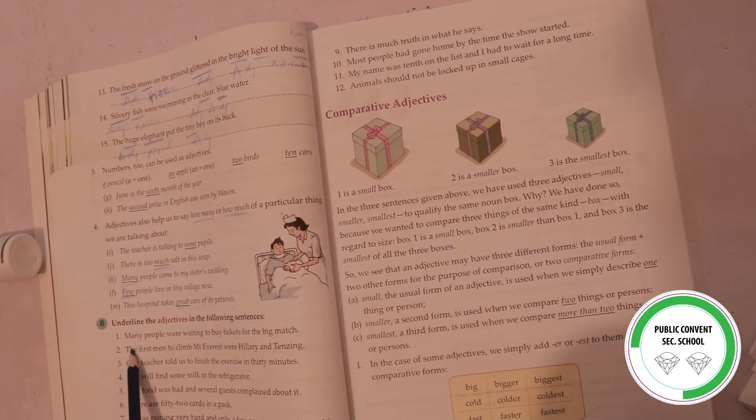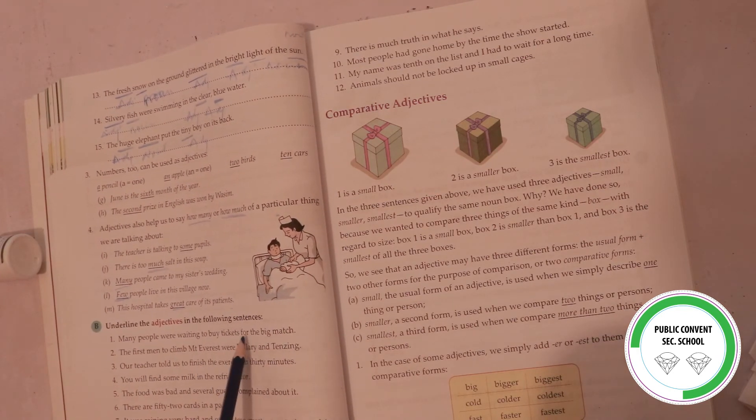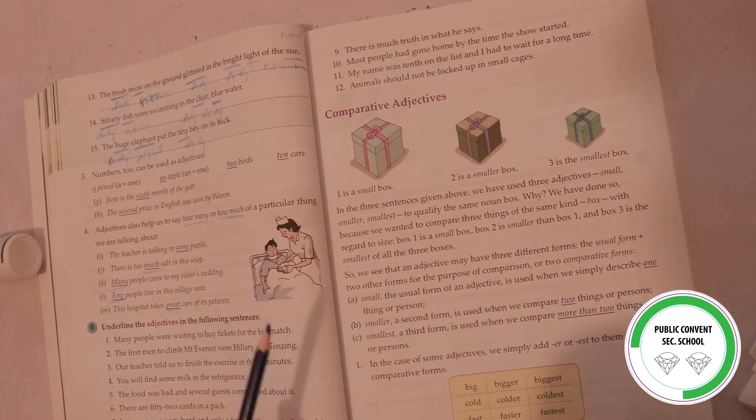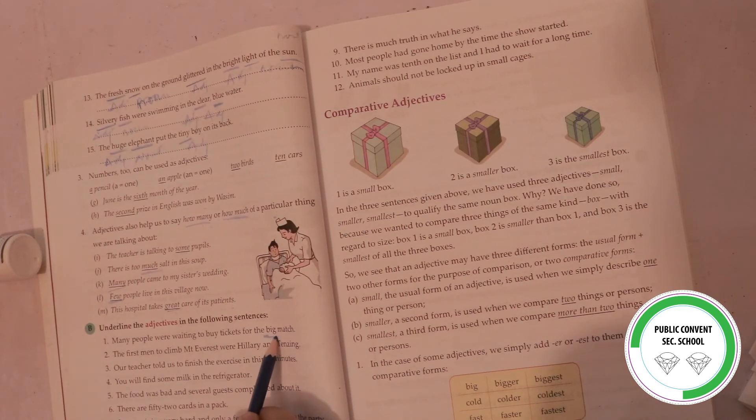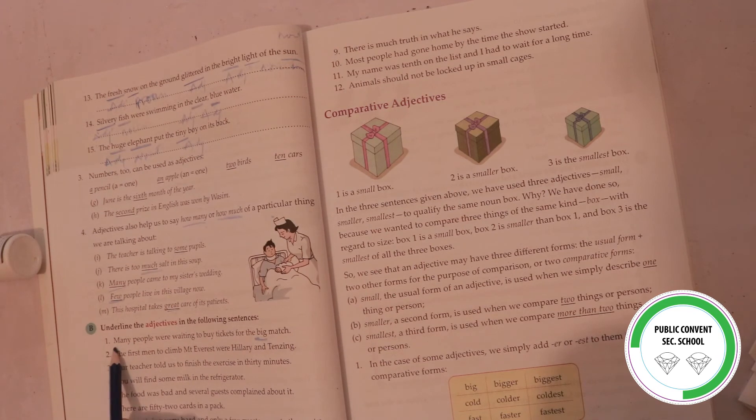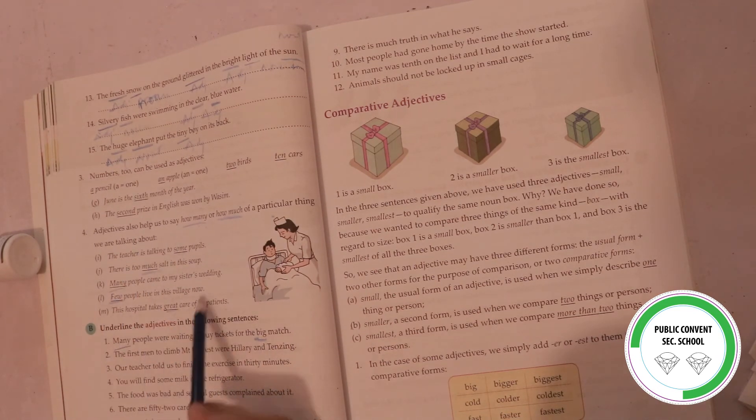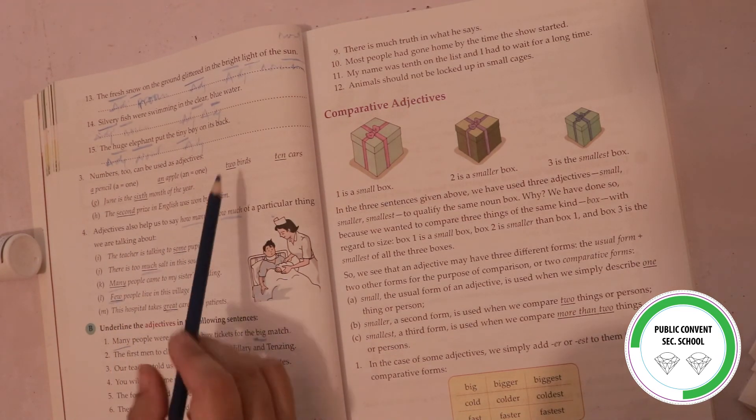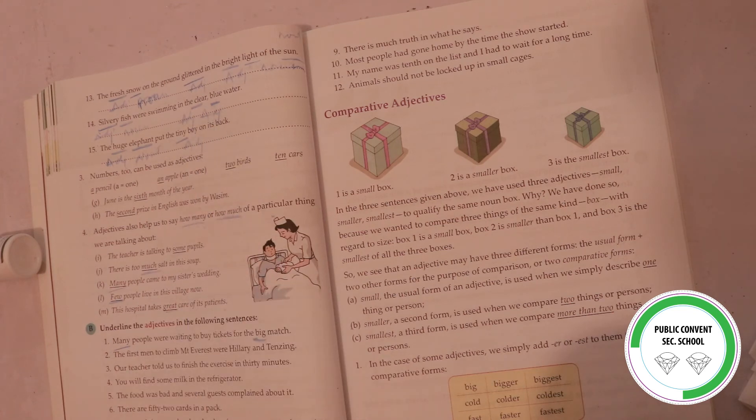Many people were waiting to buy tickets for the big match. Big is adjective. Many is adjective, because I have told you here - many, much, one, two, three, and first, second - these can be adjectives. The first man.